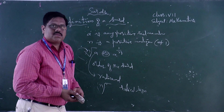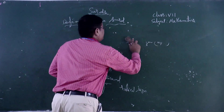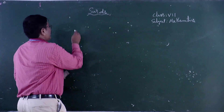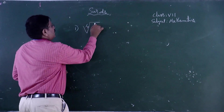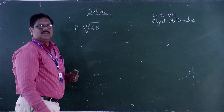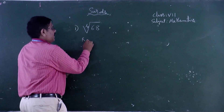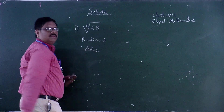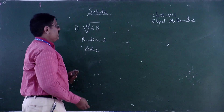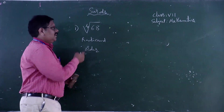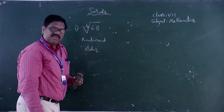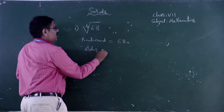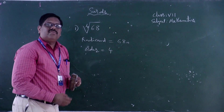We will now see a few problems on this topic. The first problem is: for ⁴√68, what is the radical and what is the order? Find the radical and order of the surd ⁴√68. As per the definition, here the radicand is 68 and the order is 4. So it is the 4th order surd.